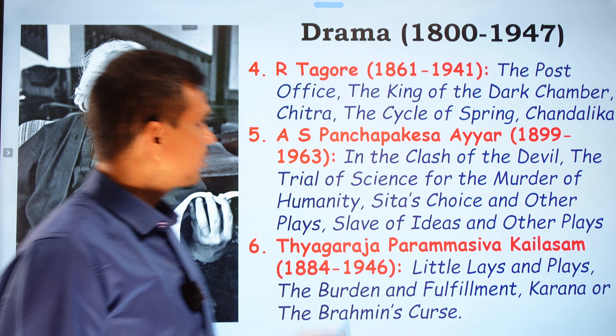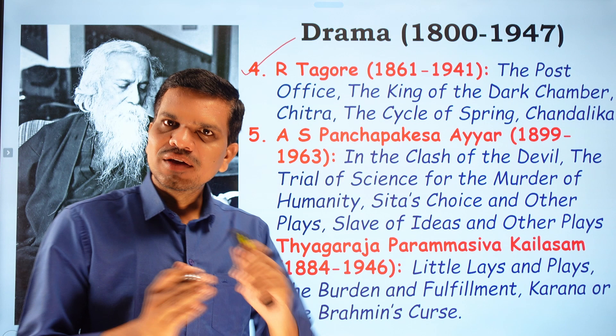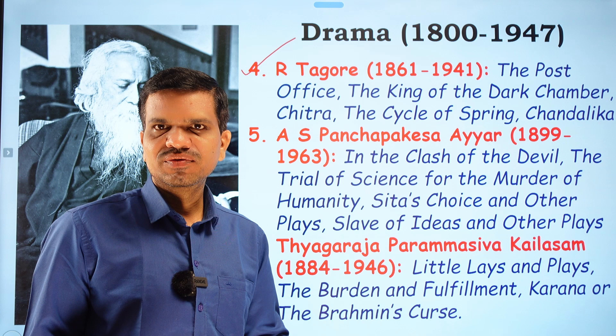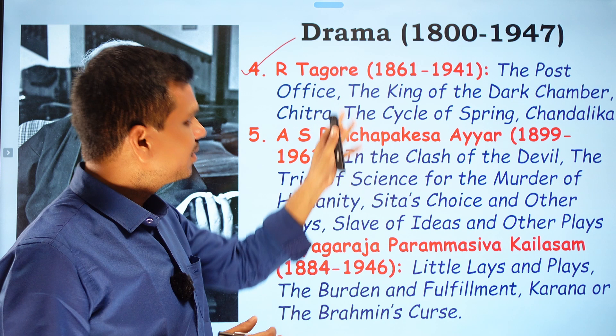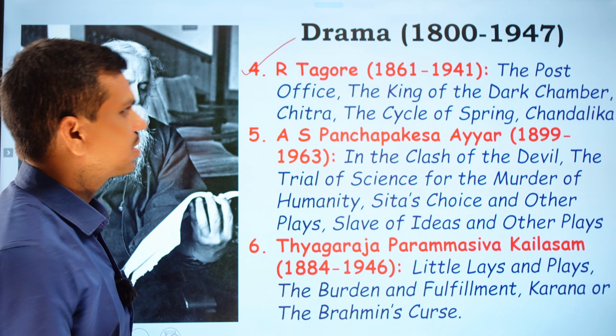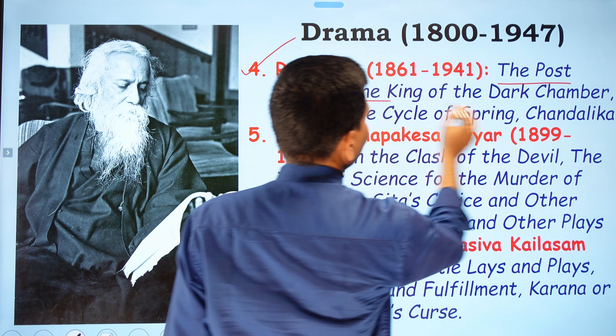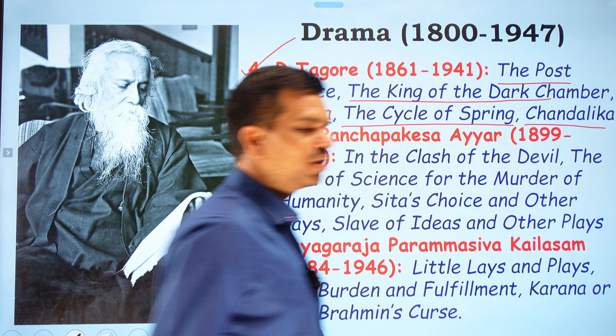Rabindranath Tagore is a very versatile personality in literature — he composed novels, fiction, short stories, and essays. As a dramatist, his famous English plays include The Post Office, The King of the Dark Chamber, Chitra, The Cycle of Springs, and Chandalika.